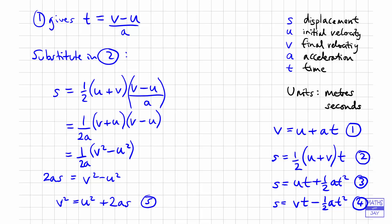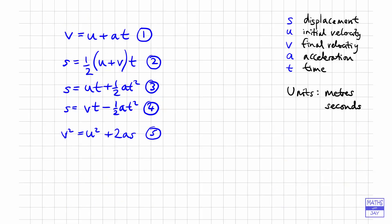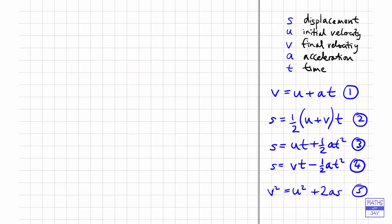We now have five equations, each missing one variable: equation one lacks S, equation two lacks A, equation three lacks V, equation four lacks U, and equation five lacks T. In problems, you're typically given three variables and need to find a fourth — write down S, U, V, A and T, identify which are given, which you want, and cross out the one not needed, then select the appropriate equation. Now let's look at the alternative calculus method for deriving these equations.